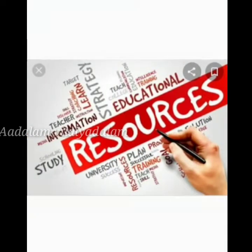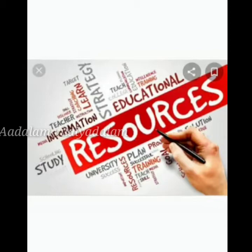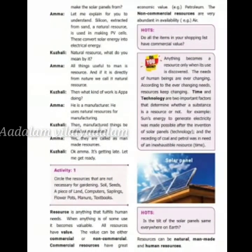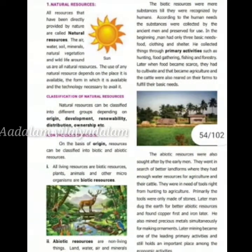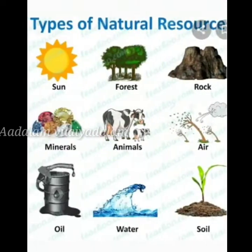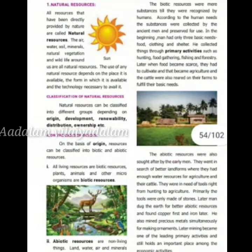Types of resources — what are natural resources? Natural resources are all resources that have been directly provided by nature: air, water, minerals, natural vegetation, wildlife, and sunlight are all natural resources. The use of any natural resource depends on the place where it is available, the form in which it is available, and the technology necessary to utilize it. Natural resources can be classified into different groups depending on origin, development, renewability, distribution, and ownership.